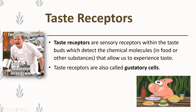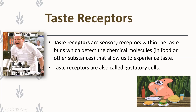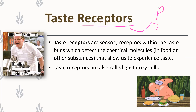Taste receptors are the sensory receptors within the taste buds. They detect the chemical molecules in food or any substance and allow us to experience taste. Taste receptors are also called gustatory cells. The word 'receptors' comes from 'receive' — taste receptors essentially receive all the taste-related information once you've consumed a particular food, drink, or substance.